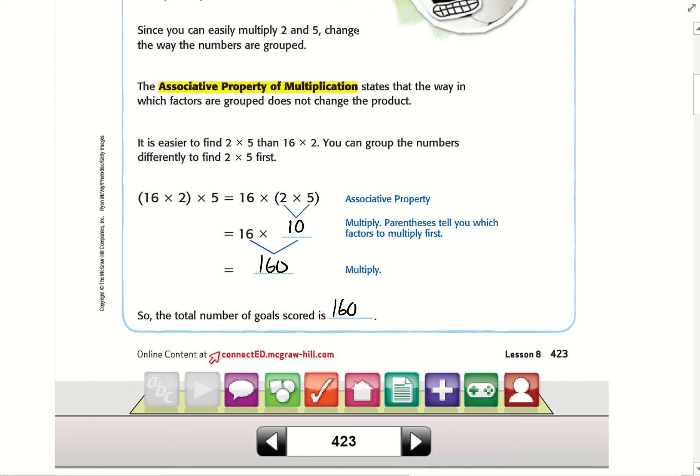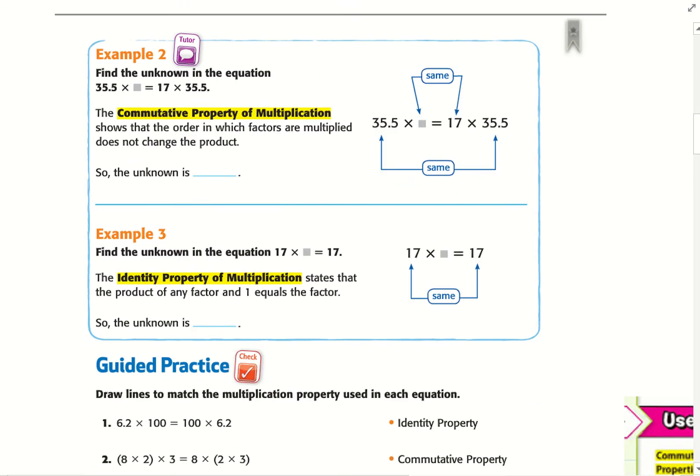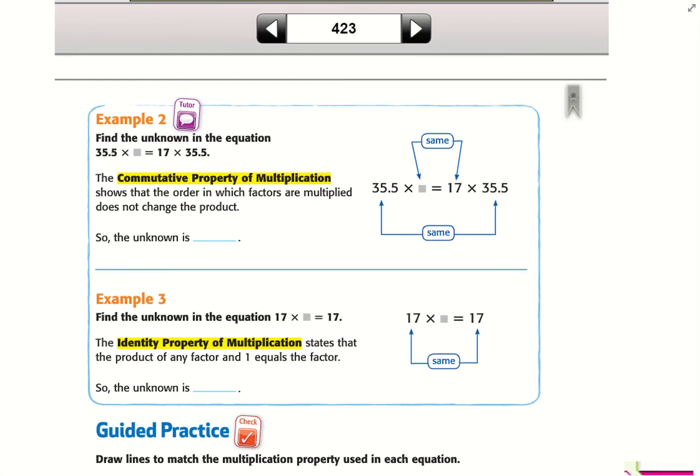Just remember, if it's grouped, we use the Associative Property. Example 2: Find the unknown in the equation 35.5 × ___ = 17 × 35.5.